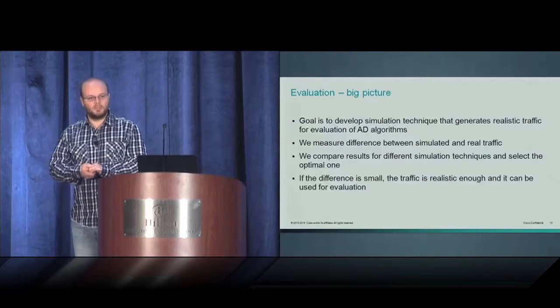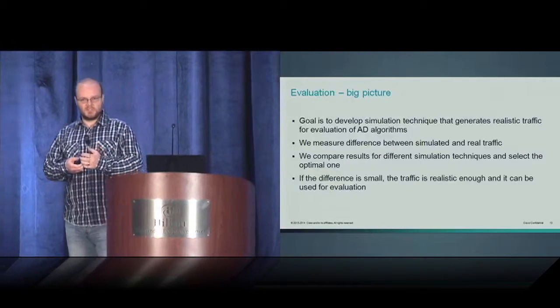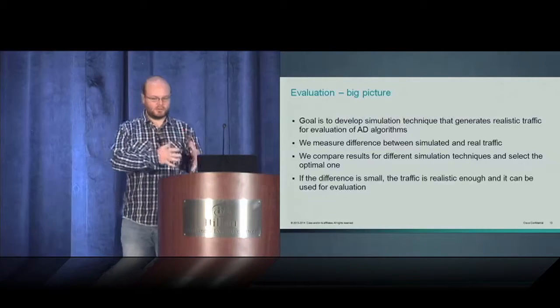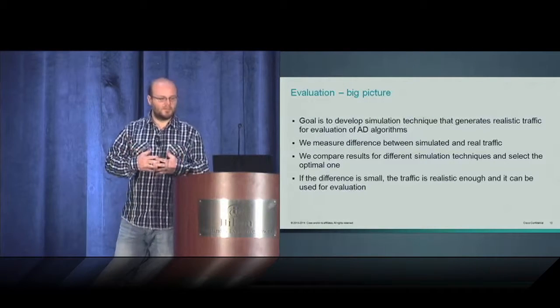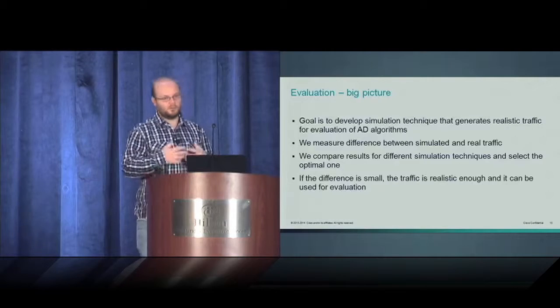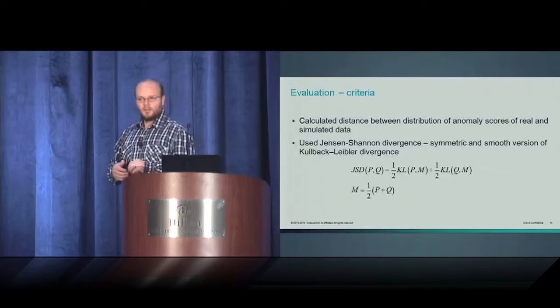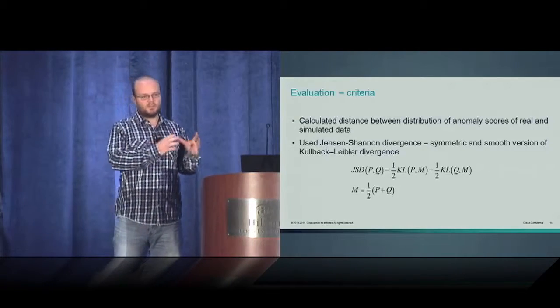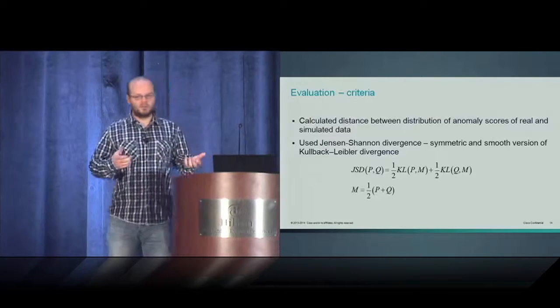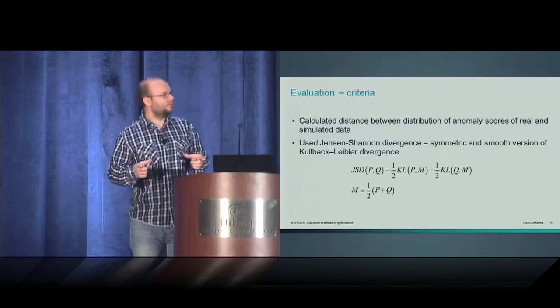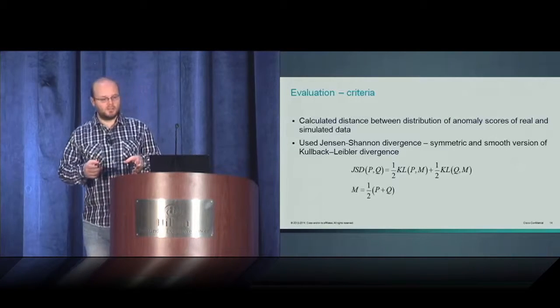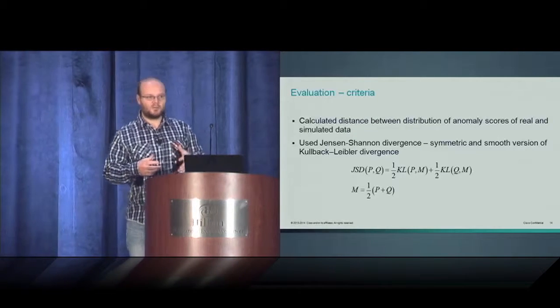A big issue is how to evaluate such algorithm. Our goal is to develop simulation techniques that are able to generate realistic traffic for evaluation of anomaly detection algorithms. So we have to somehow measure the difference between the simulated and real traffic. We compare the results and then we can select the optimal one. If the difference is small enough, we can say that the simulated traffic is realistic enough and can be used for evaluation or automatic configuration. The criteria that we have used is to basically process the simulated data and the real data with different anomaly detection methods and compare the distribution of anomaly score between the simulated data and the real data. The measure that we have used to compare these two distributions is called Jensen-Shannon divergence, which is symmetric and smooth version of Kullback-Leibler divergence, and the root square of this number covers all the aspects of the metric.